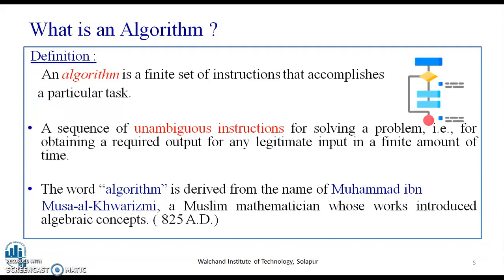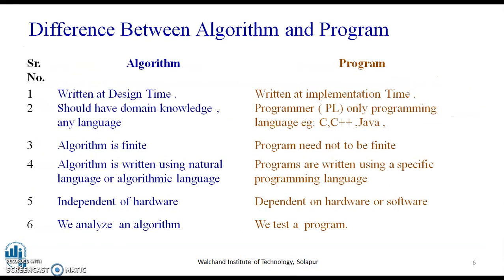Basically, an algorithm is a finite set of instructions that accomplishes a particular task, a step-by-step procedure for solving a computational problem. Then what is a program? It is also a step-by-step procedure for solving computational problem. Then what is the difference between a program and an algorithm? So, by comparing an algorithm and program, we will understand and then differentiate between an algorithm and a program.